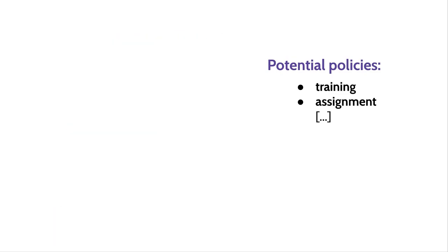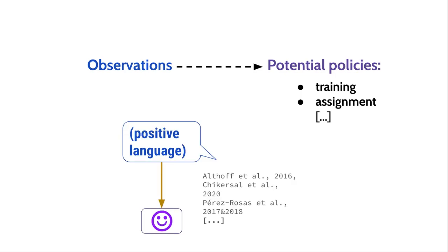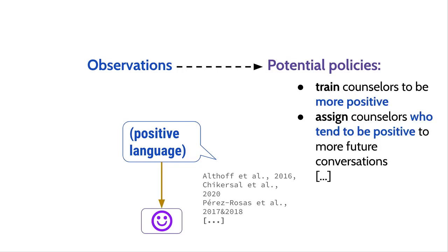Now these policies don't have to come out of thin air. For instance, there's a lot of past research on mental health interactions, and maybe we can improve counseling in a data-driven way. Let's say our analysis tells us that in conversations that go better, for instance according to a client's rating, the counselor uses more positive language. So maybe we should sign up more positive counselors.